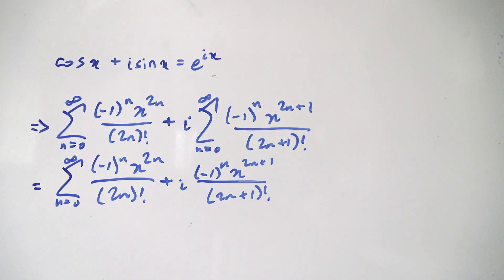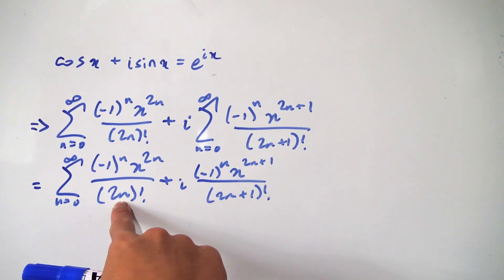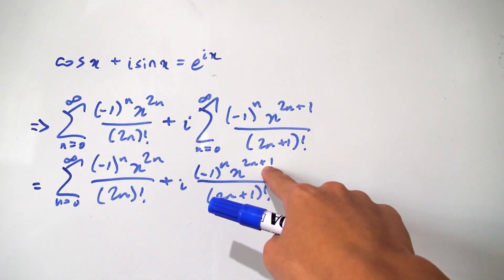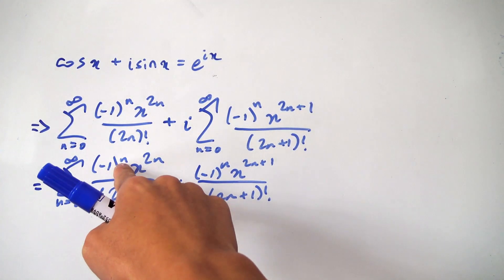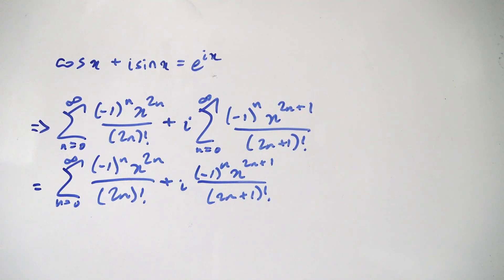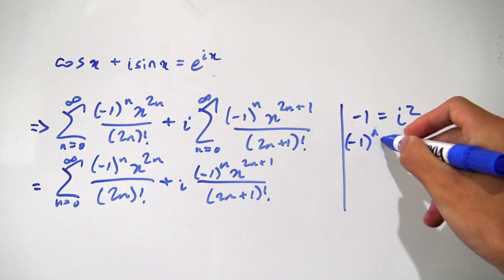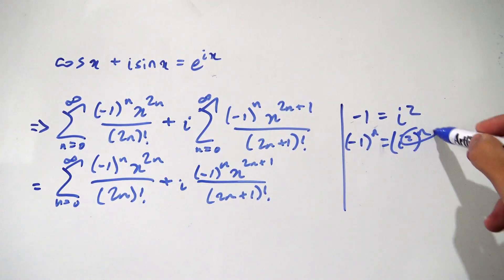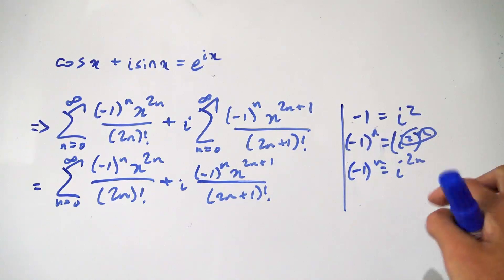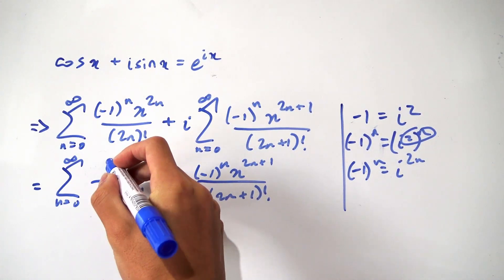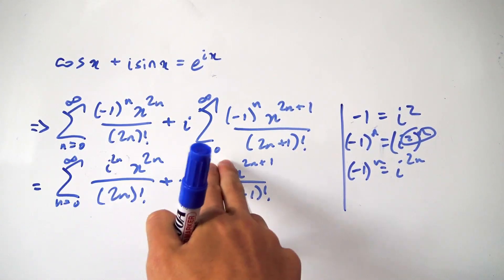Now we want to manipulate these expressions a little. Notice these negative 1 to the nth powers look out of place because we have 2n in the exponent and 2n in the denominator of this fraction, and 2n plus 1 in the other. Ideally we'd like the power to match. Remember that negative 1 is exactly i squared, so negative 1 to the n equals i squared to the n, which equals i to the 2n. So we can rewrite negative 1 to the n as i to the 2n, and do the same in the second fraction.